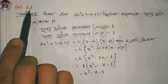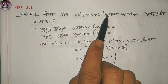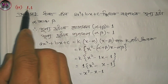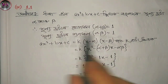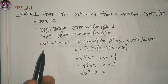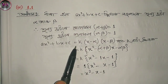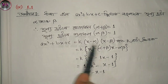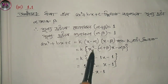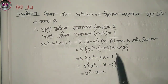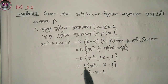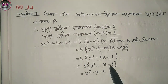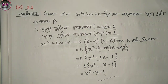Next question: the roots are 1 and 1. So x squared plus b x plus c equals x minus alpha times x minus beta. Alpha plus beta equals 1 plus 1 equals 2, and alpha into beta equals 1. So we write: x squared minus 2x plus 1 equals 0. This is the first question.